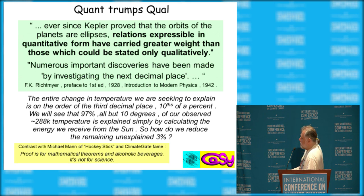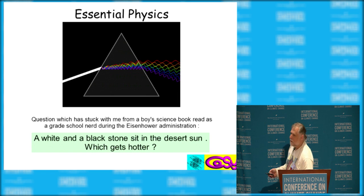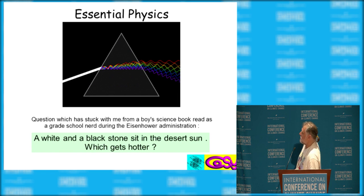In contrast, Michael Mann, hockey stick, said, proof is for mathematical theorems and alcoholic beverages. It is not for science. And that's what we're up against. This is what motivated me to just be so bugged that I got into this.